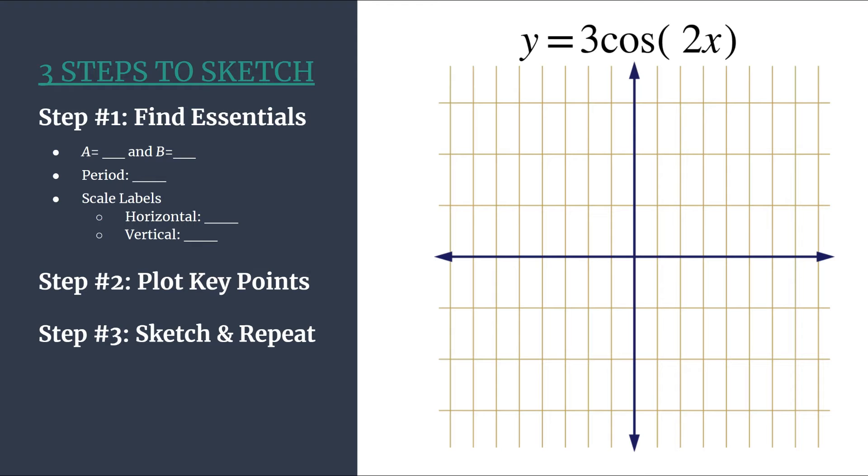This is where you'll really do all of your analysis and set yourself up for success. Step two, you'll plot your key points in a pattern. And step three, you'll sketch your graph and then repeat it for as many cycles as you need. So it's going to be a really easy process and once you employ this method a few times, you should be able to graph any unshifted cosine graph.